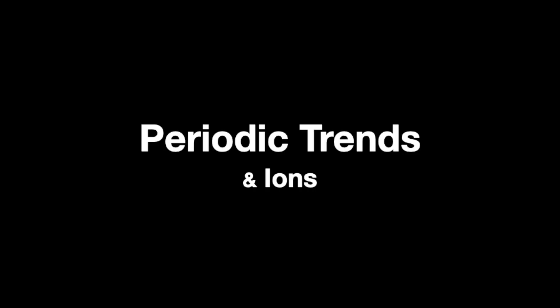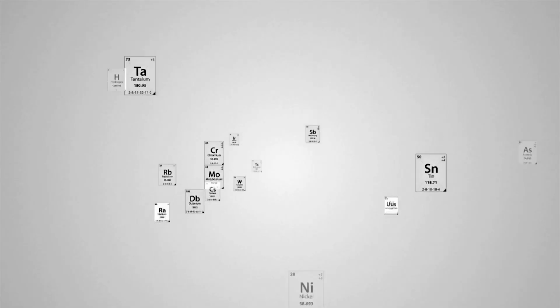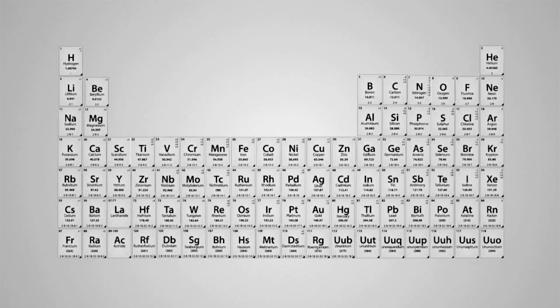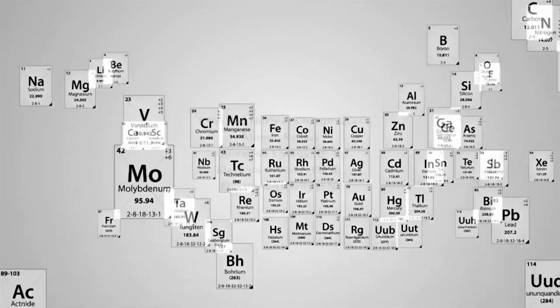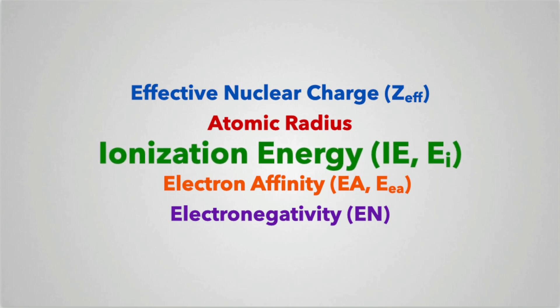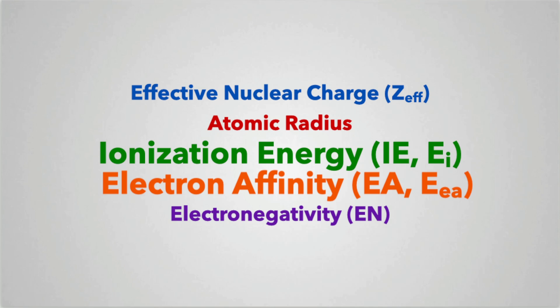You probably already know the periodic trends on the periodic table, or maybe you watched our Periodic Trends with Atoms video. In this video, I'm going to show you what the periodic trends have to do with ionization of atoms, meaning the formation of ions. The periodic trends are effective nuclear charge, atomic radius, ionization energy, electron affinity, and electronegativity. I'll be focusing more on ionization energy and electron affinity when discussing ions, but I'll also review the other periodic trends.